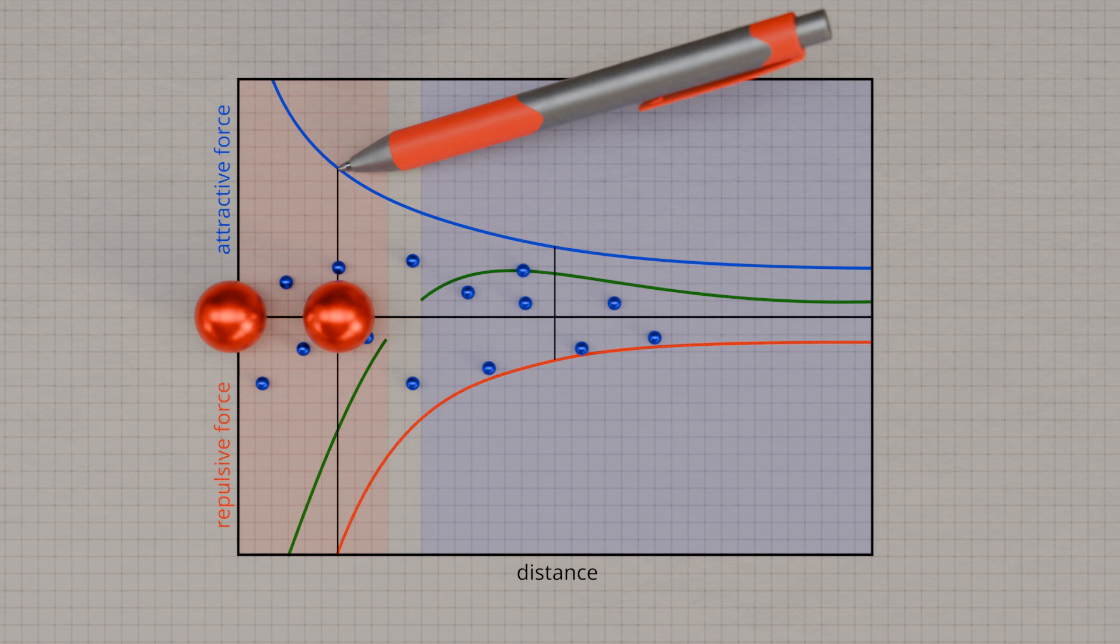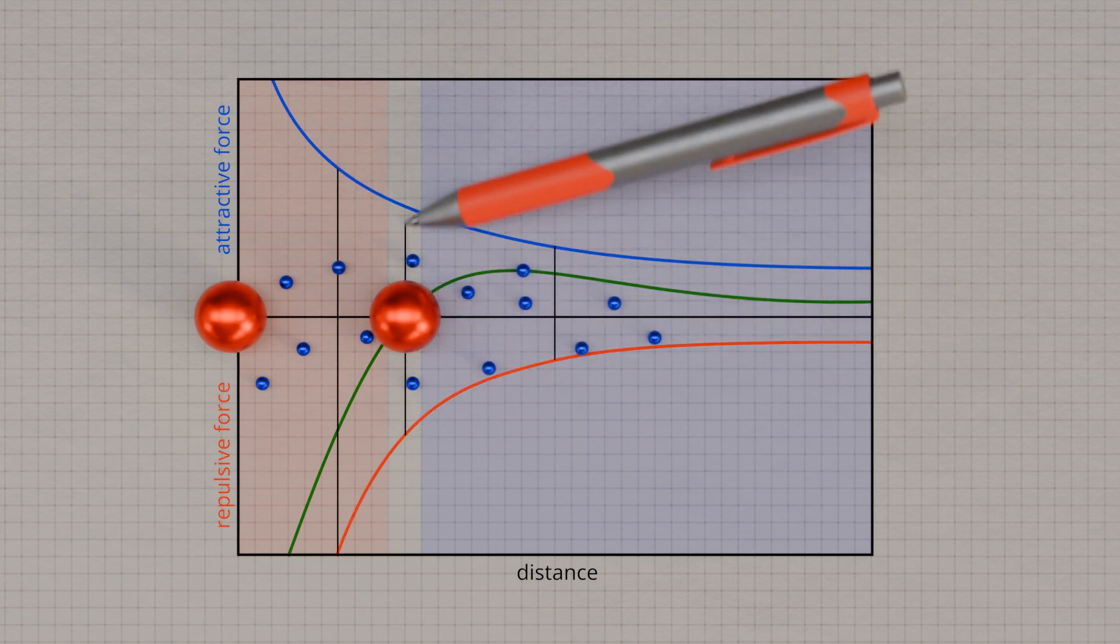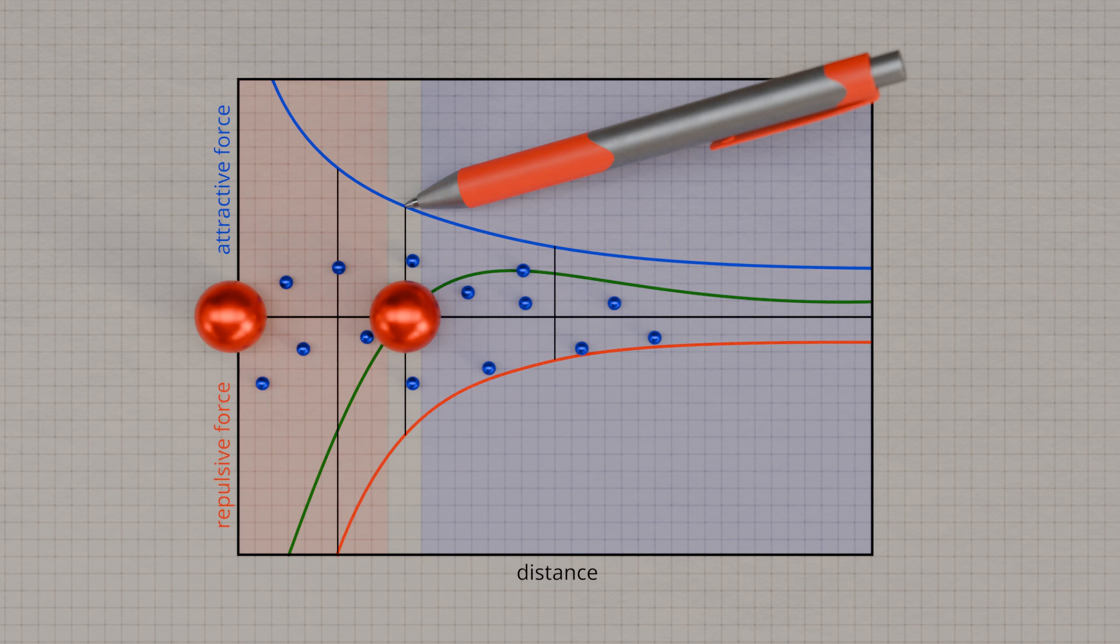The distance between the atoms therefore increases again. Finally, an equilibrium distance is reached in which both forces are equal and the resulting force disappears. In this stable position, the cations maintain a fixed distance.